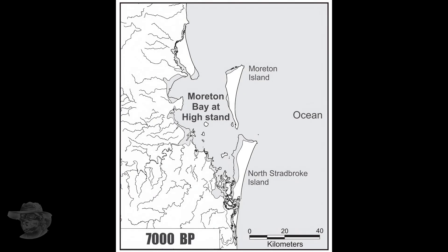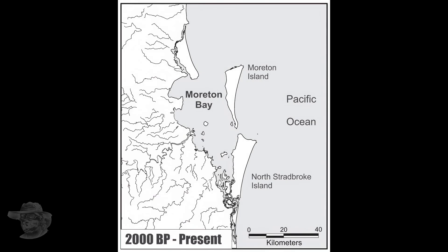Here we are 7,000 years ago. Sea levels have risen quite substantially — they're actually higher than they were today. And this is where your Nudgee coastlines and all those paleo coastlines you can see down on the east side of Brisbane come from. From about 2,000 years ago to today, the coasts have been pretty much stable. Although, as we've seen, when it comes to sea levels, it's always rising or falling.